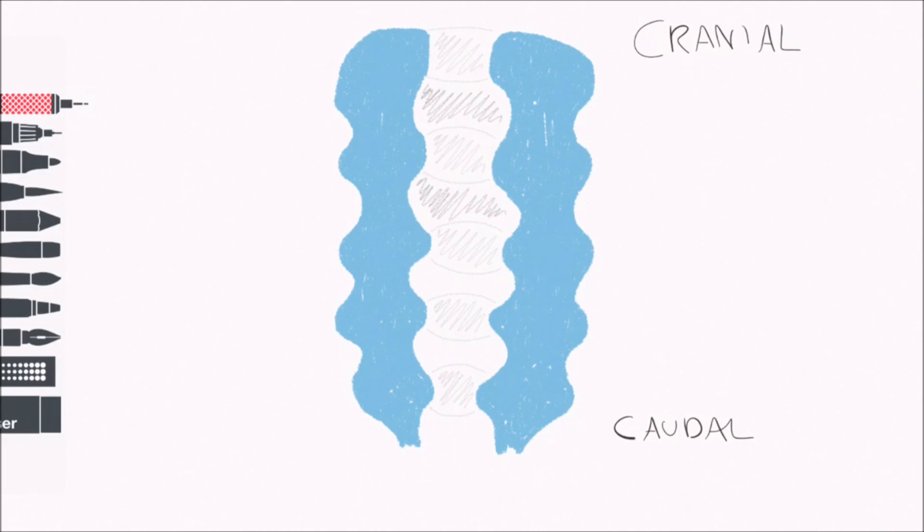Let's talk first about the tongue, which forms from four swellings on the base of the developing mouth. To see this, we need to return to the coronal section of embryo around the end of the fourth week. Here we have the pharyngeal arches.